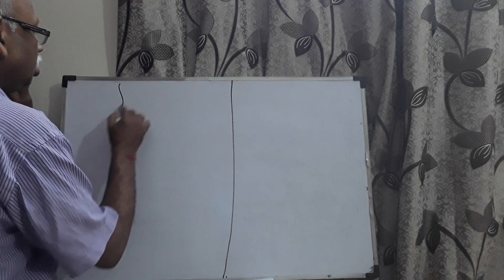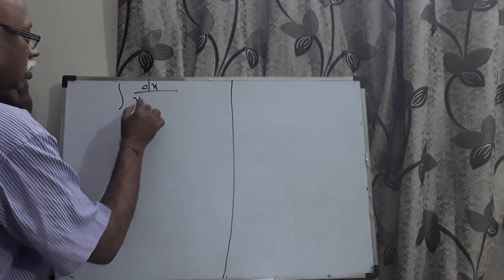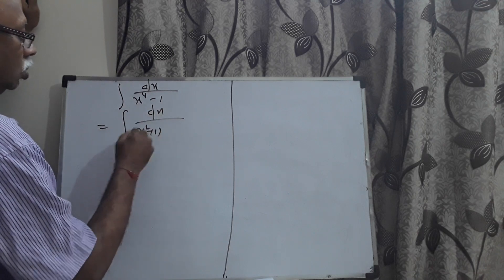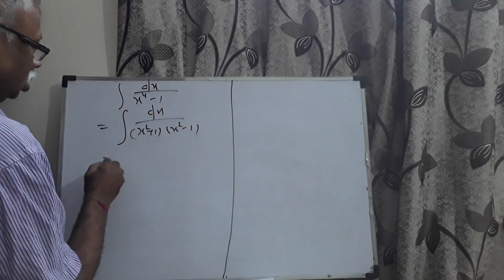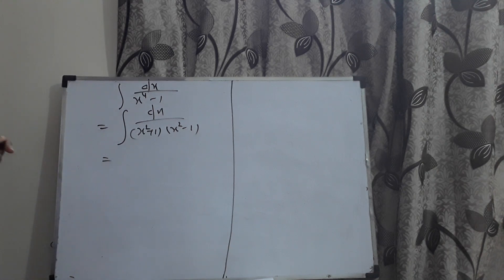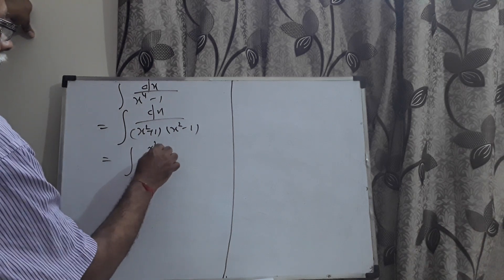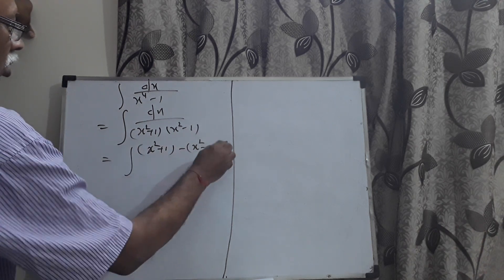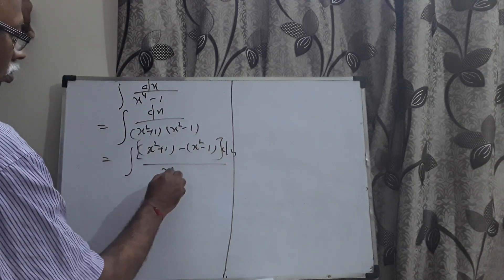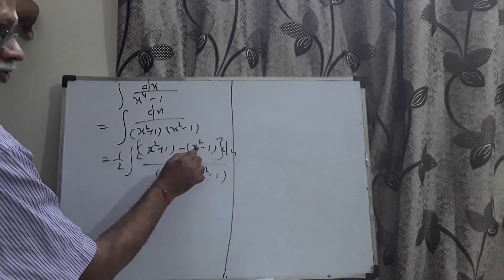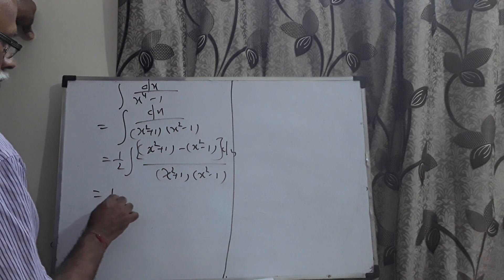The next problem: evaluate ∫ dx/(x⁴ − 1). I write x⁴ − 1 = (x² + 1)(x² − 1). Normally this uses partial fractions with the substitution x² = t, but I'll give you an easier method. I write the numerator as (x² + 1) − (x² − 1), so that x² cancels and 1 − (−1) = 2. Dividing by 2 to compensate gives the factor 1/2.